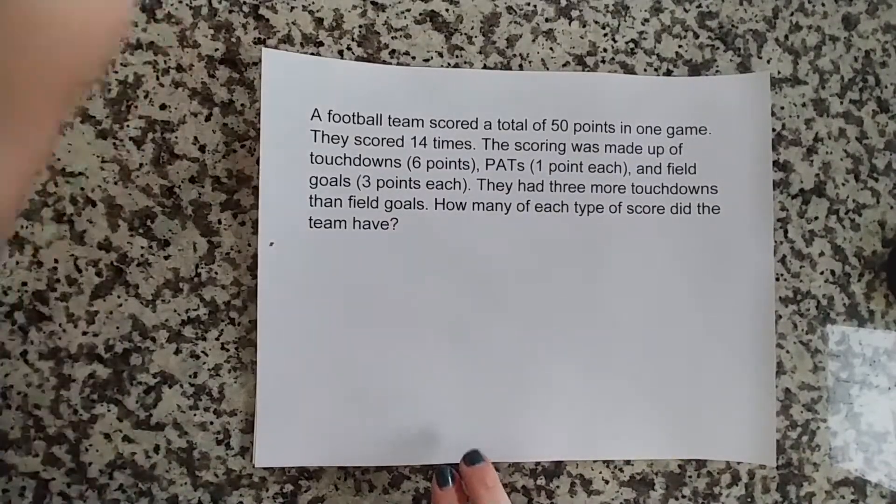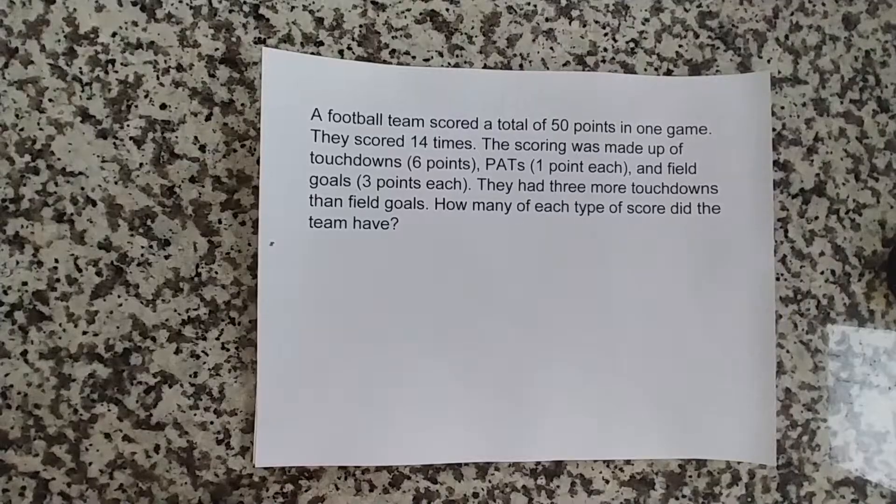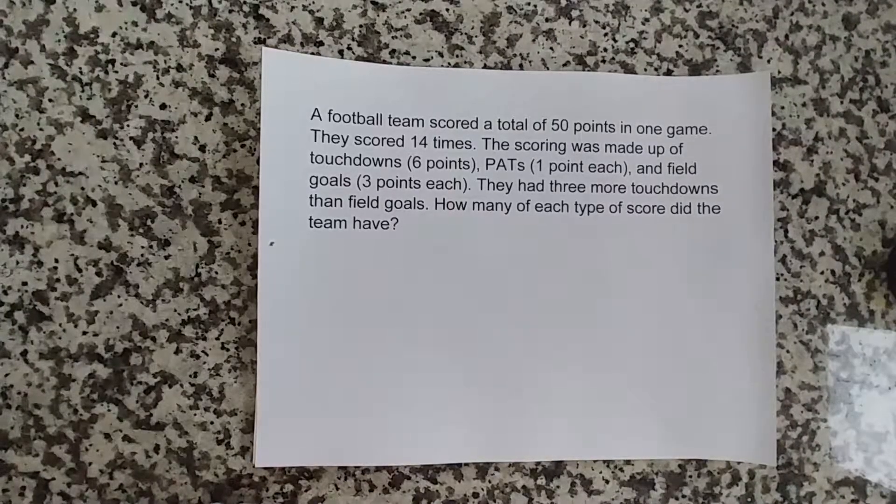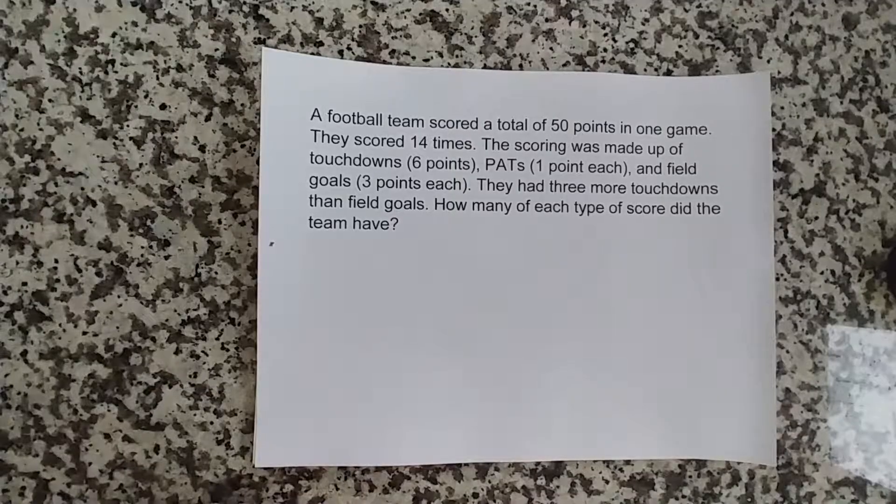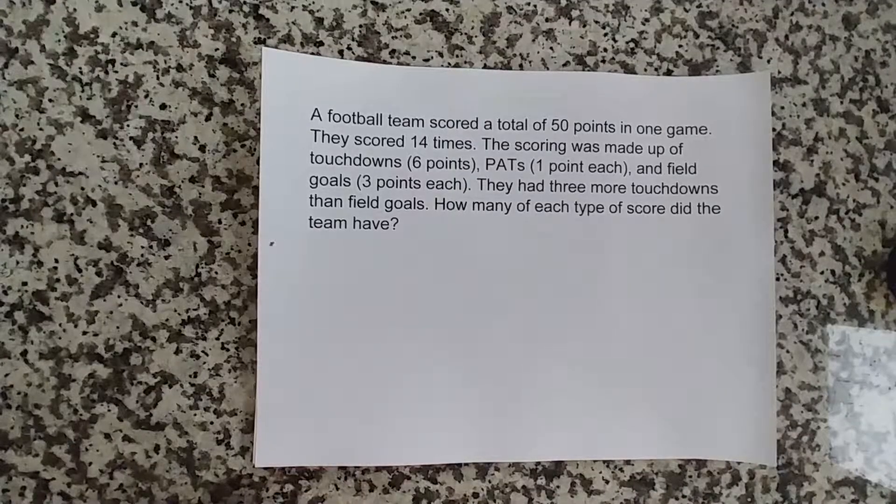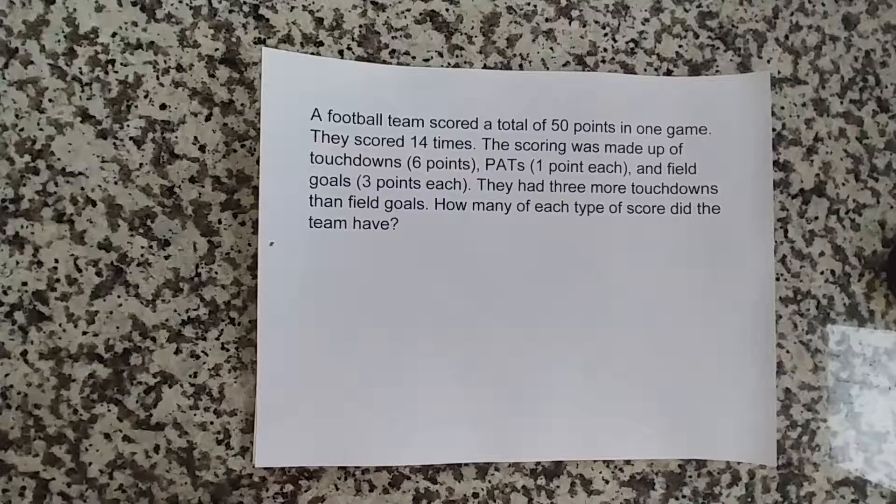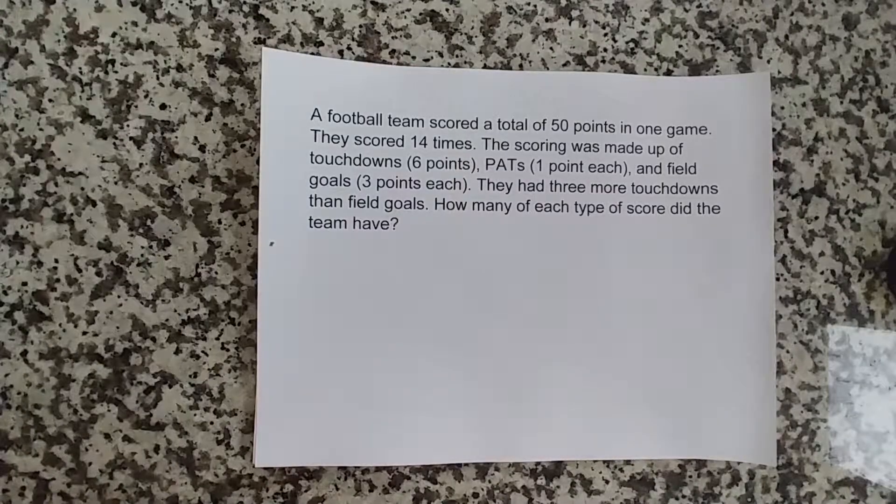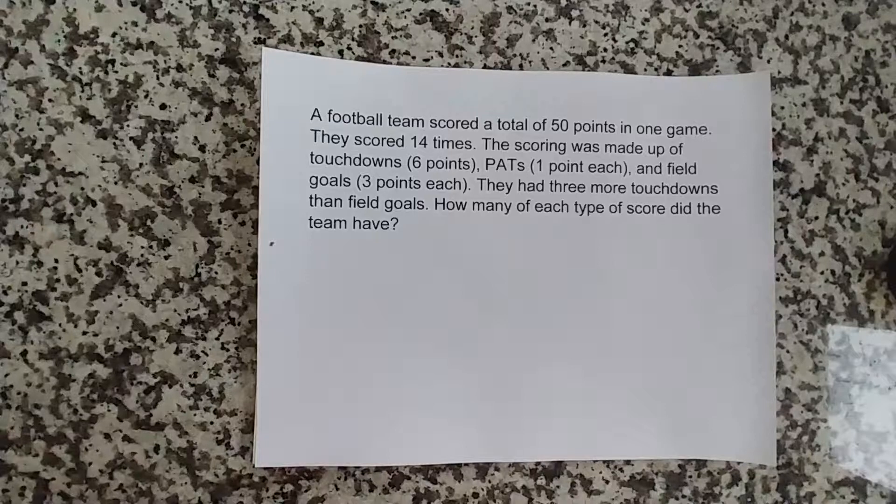Alright, the question reads: A football team scored a total of 50 points in one game. They scored 14 times. The scoring was made up of touchdowns which are 6 points, PATs which are 1 point, and field goals which are 3 points. And they had 3 more touchdowns than field goals. How many of each type of score did the team have?